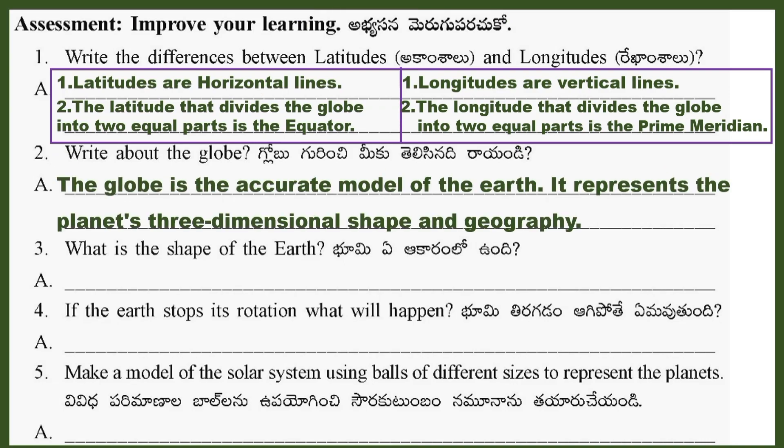Question 2: Write about the globe. Answer: The globe is the accurate model of the Earth. It represents the planet's three-dimensional shape and geography. Question 3: What is the shape of the Earth? Answer: The shape of the Earth is round or sphere.